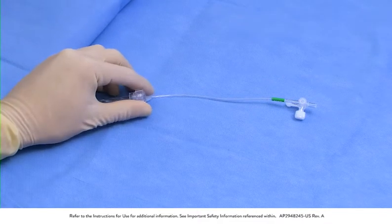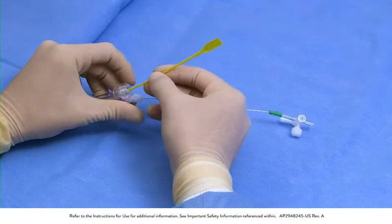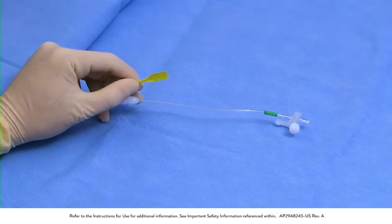Use the introducer tool provided to pass the loaded delivery catheter and bare wire through the hemostasis valve of the guide catheter or introducer sheath.